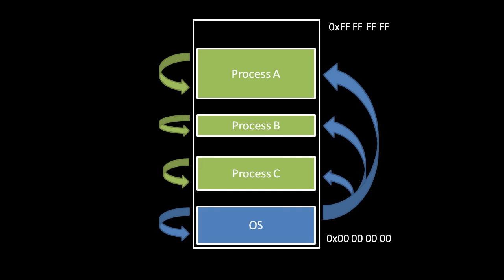These routines, called system calls, are the means by which processes initiate requests to the operating system. These system calls provide functionality for things like reading and writing files, or for sending and receiving data over the network.